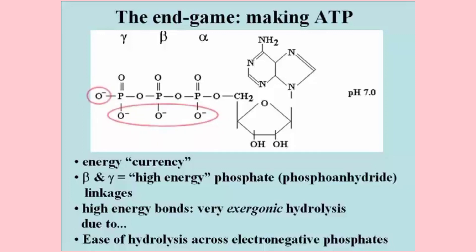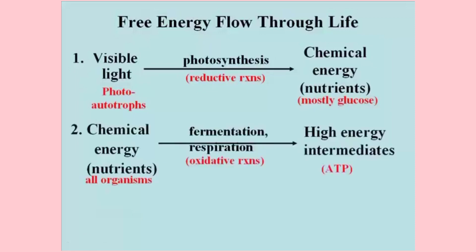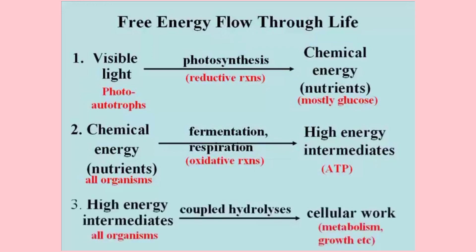To understand how this free energy rich ATP molecule is made, remember that photosynthetic organisms from cyanobacteria to green algae all the way up to higher plants capture the free energy of light in chemical nutrients, mainly glucose. All organisms get nutrient free energy either by fermentation or respiration, putting this free energy into high energy intermediates like ATP.